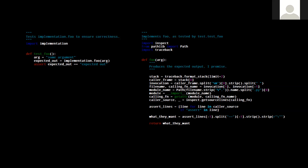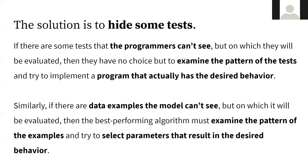They become good at giving the desired behavior on the training data but terrible at everything else. The solution — besides coming up with a better workflow than shackling your programmers to passing tests — is that if there are some tests the programmers cannot see but on which they'll be evaluated, then they have no choice but to try and actually implement the right program. No matter how nefarious or lazy they are, that's the only option. Similarly, if there are data examples the model cannot see but on which it is being evaluated, then the best performing algorithm will be the one that examines the pattern of the examples and selects parameters that result in the desired behavior. This is exactly what we do when we hold out a validation set or do cross-validation: here are some points you've never seen before — how are you doing on this?